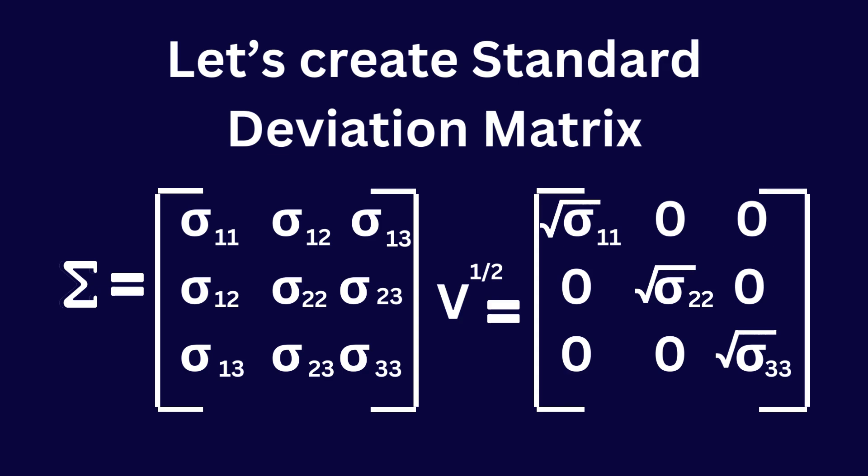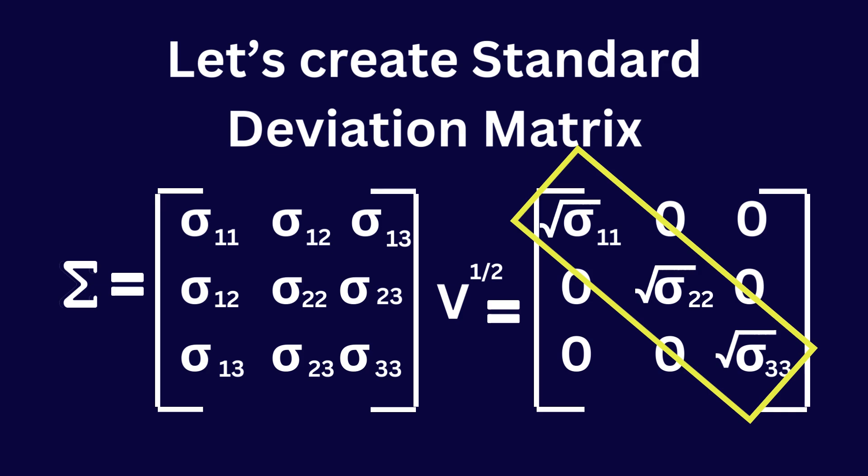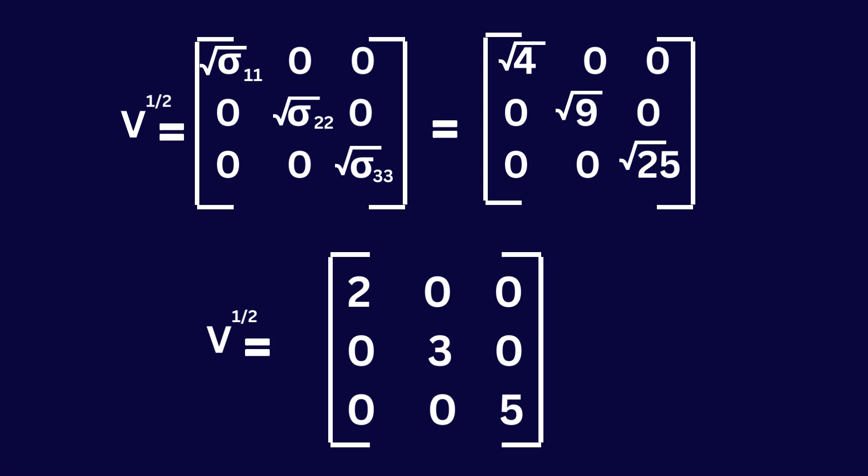If your covariance matrix is a 4 by 4 matrix, then your standard deviation matrix should also be a 4 by 4 matrix. Put 0 for all off-diagonal values because we assume all variables are uncorrelated. Then put the same sigma value for diagonal values and get the square root of those values. The square root of 4 is 2, the square root of 9 is 3, and the square root of 25 is 5.